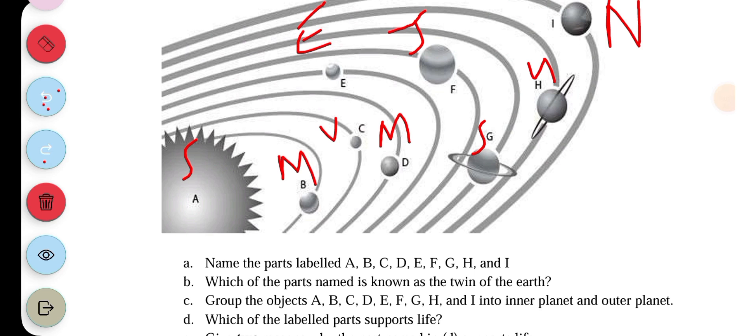Then question C says: Group the objects A, B, C, D, E, F, G, H into inner planets and outer planets. So A is actually not a planet and should be excluded.